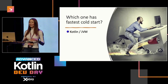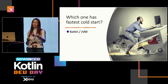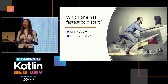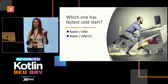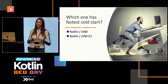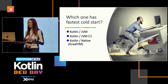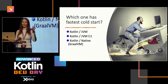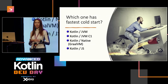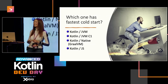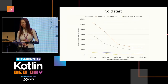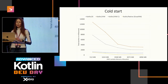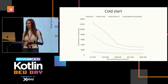Which one has the fastest cold start? Let's see — those who think Kotlin on JVM, raise your hand. Kotlin JVM C1? Kotlin Native GraalVM? And who thinks JS will be the winner? Well, let's look at the results — it is GraalVM Native that's the winner.